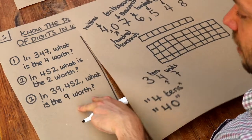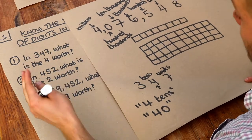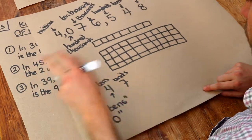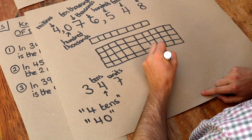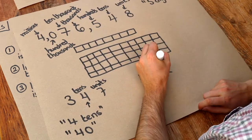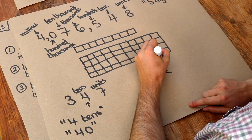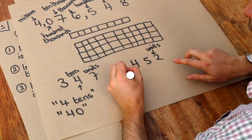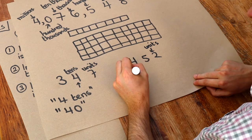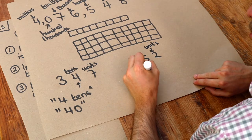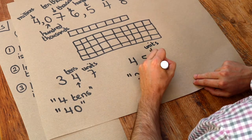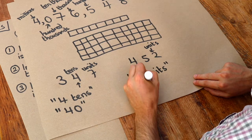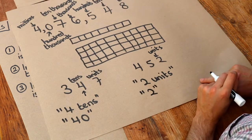What about the next one? 452 — what is the two worth? Well, we know that the rightmost digit is the units digit. So we could either describe this in our answer as two units, or to be honest we don't have to say the word units — we could just write two, and that would be the answer.